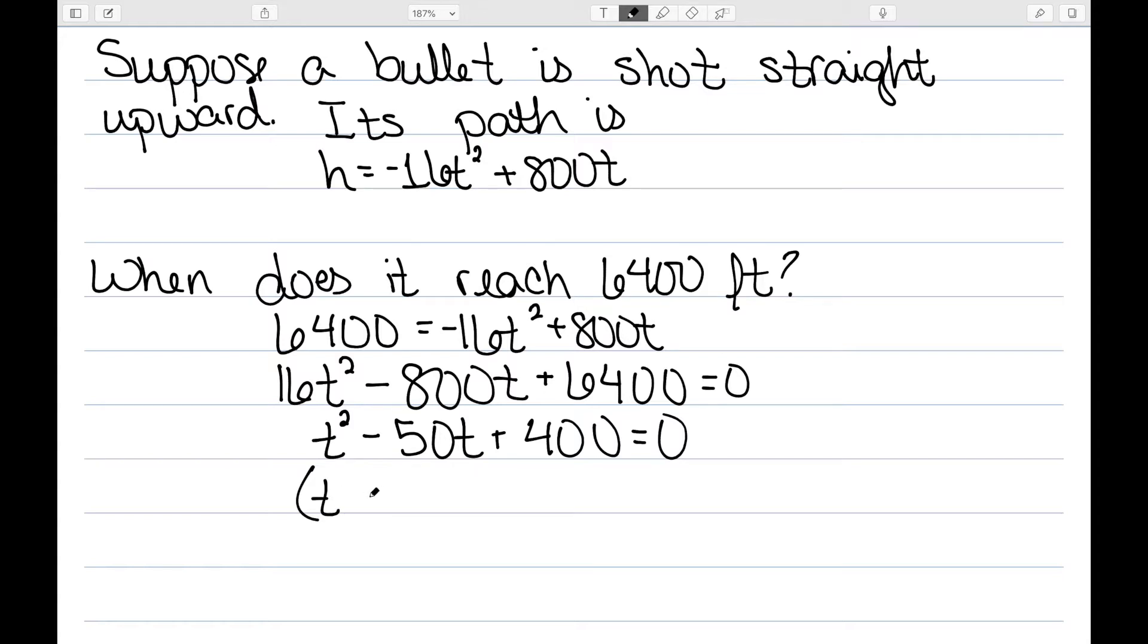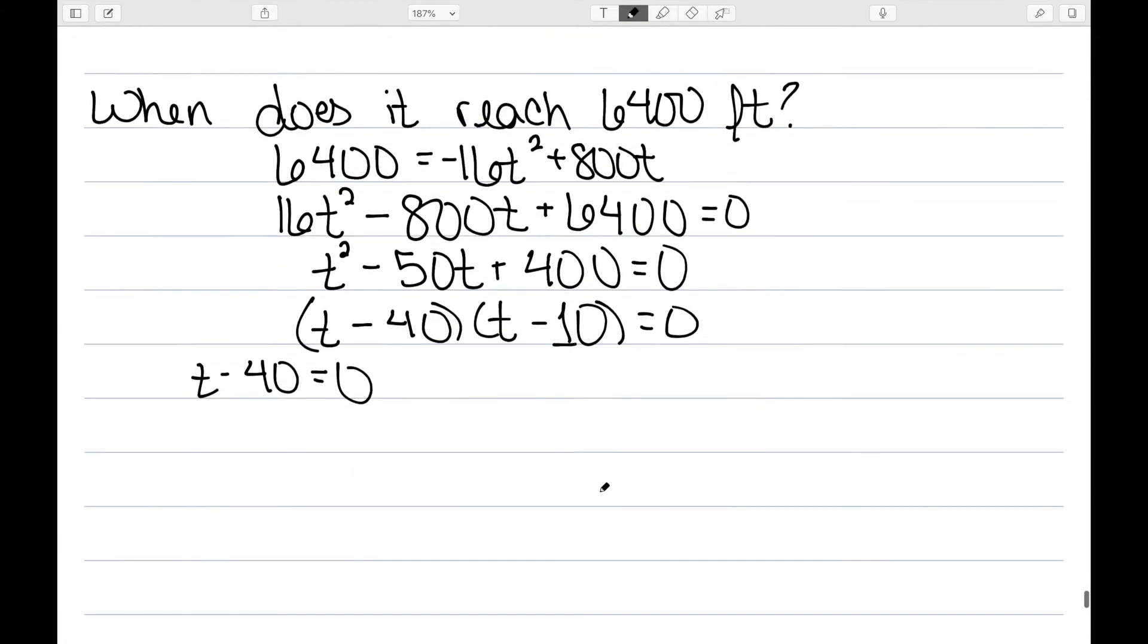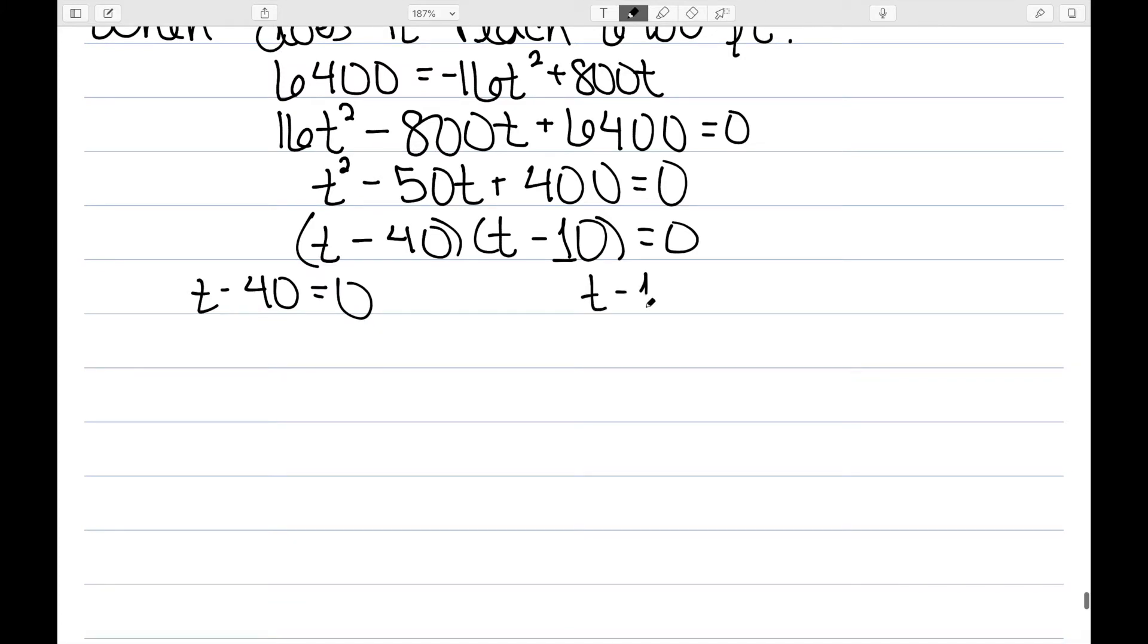And this is going to factor into (t minus 40)(t minus 10). So when I set each of these equal to 0, I have t minus 40 equals 0 and t minus 10 equals 0. So that gives me 40 and 10. So this bullet reaches the height of 6400 feet after 40 seconds and 10 seconds. So it does it twice.